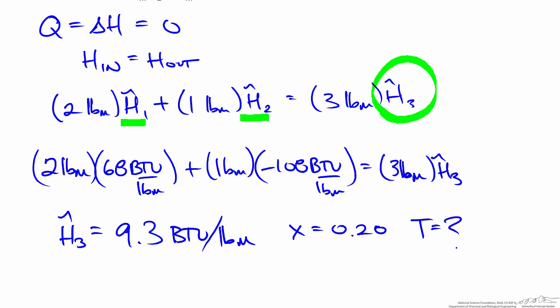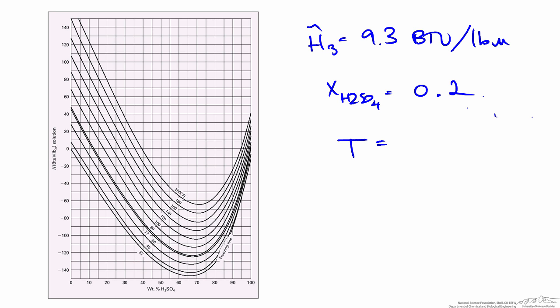Let's go back to the enthalpy-concentration diagram to find that temperature. We know the specific enthalpy of the mixture is 9.3 BTUs per pound, so that's right below this horizontal line on the enthalpy diagram. We also know the concentration of the mixture is 20%. If we bring that up, we can find the isotherm where this mixture has a specific enthalpy of 9.3 BTUs per pound. It's in between 100 and 120 in this region.